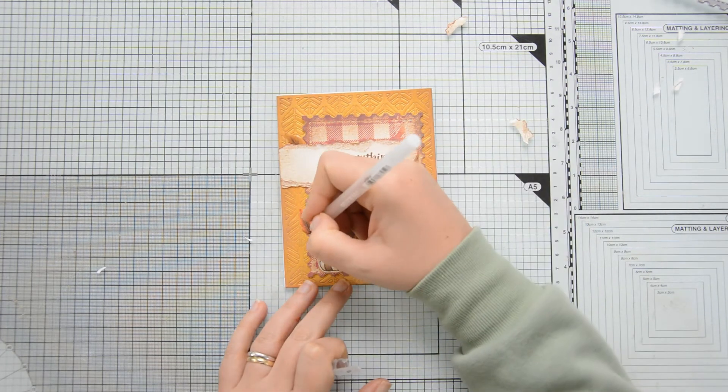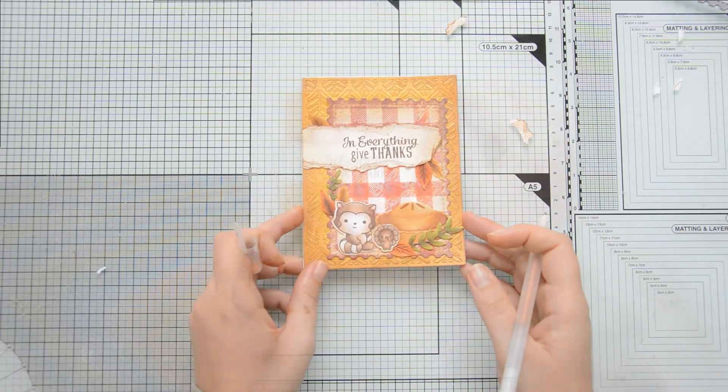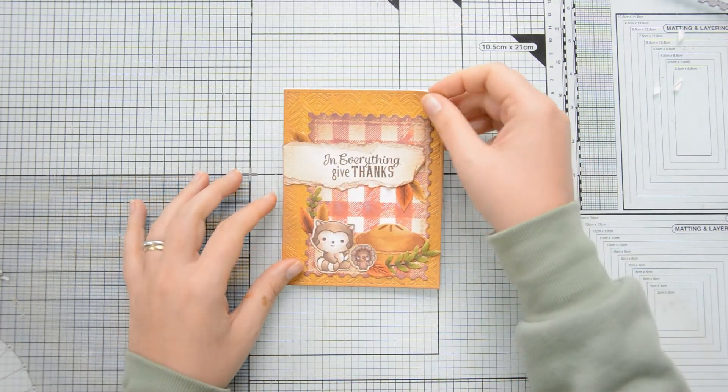As a last step I added a few gold details with a sakura jelly roll pen just to the center of the leaves and that finished off my card.